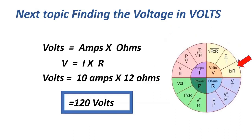The next formula for voltage: volts equals amps times ohms, or V equals I times R. That equals 10 times 12, equals 120 volts.